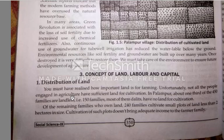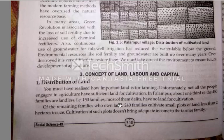70% of the people are engaged in agriculture, but some are laborers, some are farmers, and some are farm laborers. One third of the 450 families — that is 150 families — most of them Dalits, have no land for cultivation.